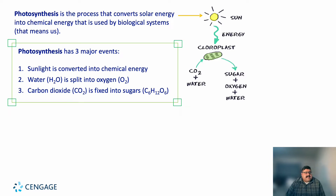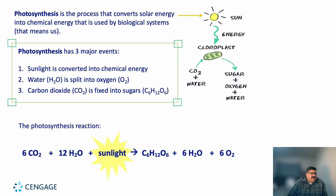Photosynthesis occurs in three major events: sunlight is converted into chemical energy; water is split into oxygen atoms; and carbon dioxide is fixed into sugar — the sugar molecule being glucose, C6H12O6. The photosynthesis reaction takes six carbon dioxide molecules and 12 water molecules plus sunlight, and produces a glucose molecule, water molecules, and an oxygen molecule.